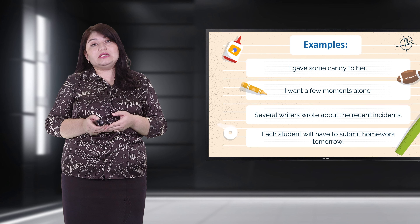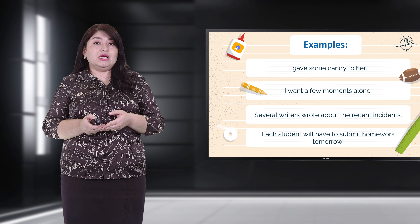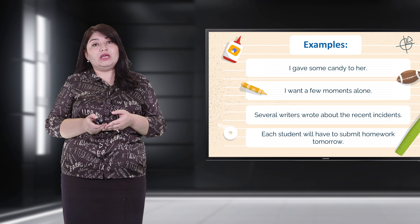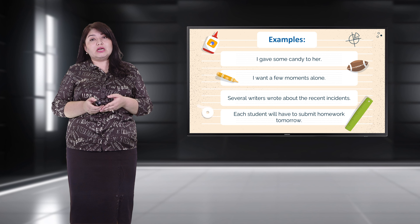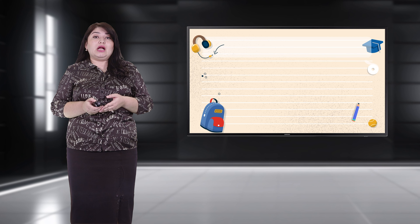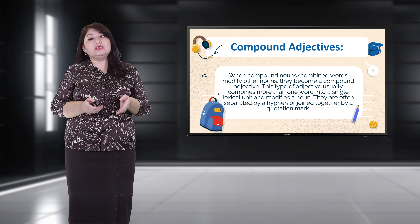Articles also modify nouns, so articles are also adjectives. 'A' and 'an' are used to refer to an unspecific noun, and 'the' is used to refer to a specific noun. For example: 'A cat is always afraid of water' — the noun 'cat' refers to any cat, not a specific one. 'The cat is afraid of me' — this cat is a specific cat. 'An electronic product should always be handled with care.'